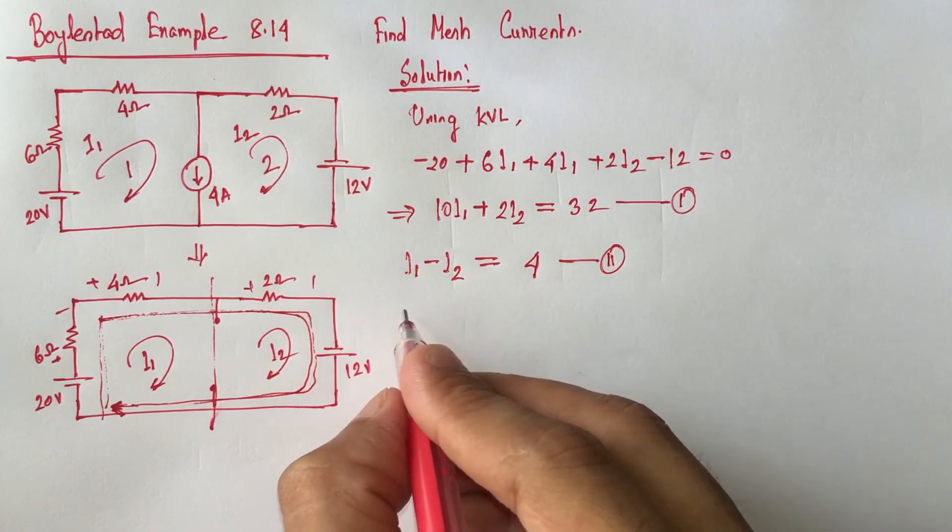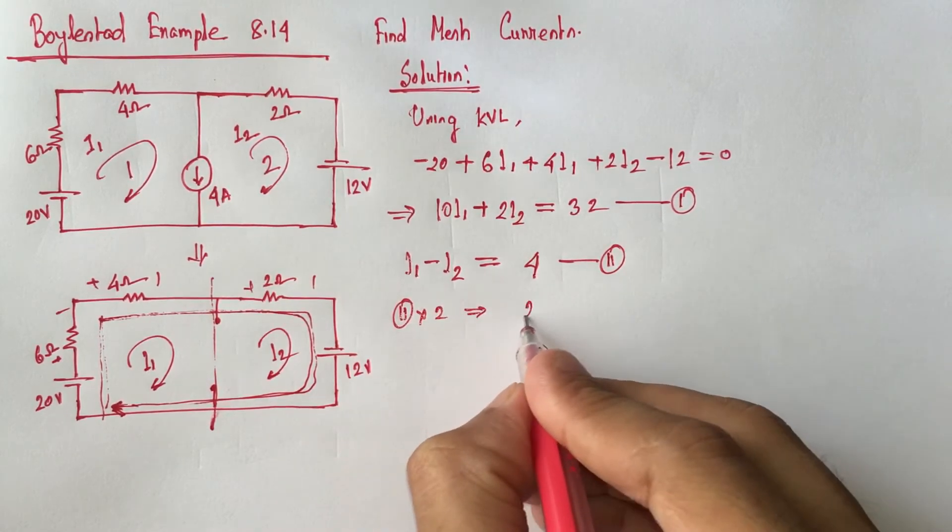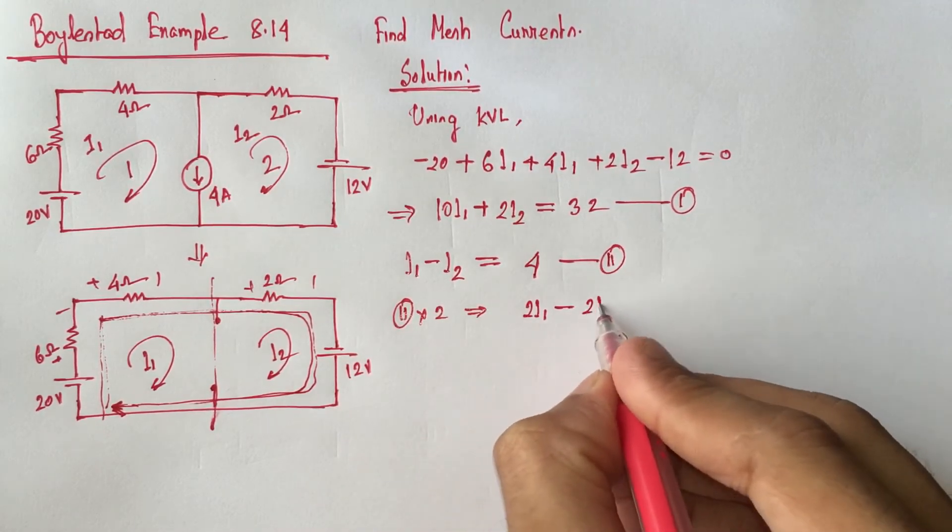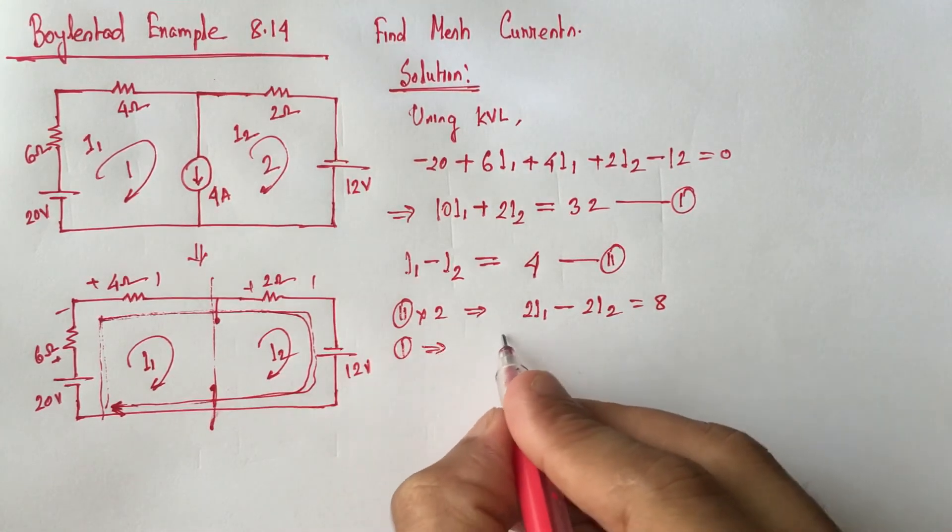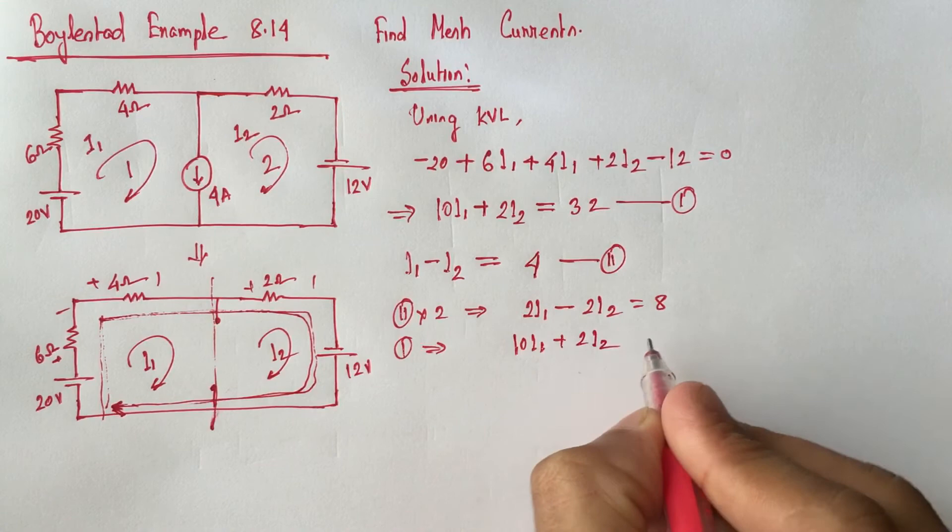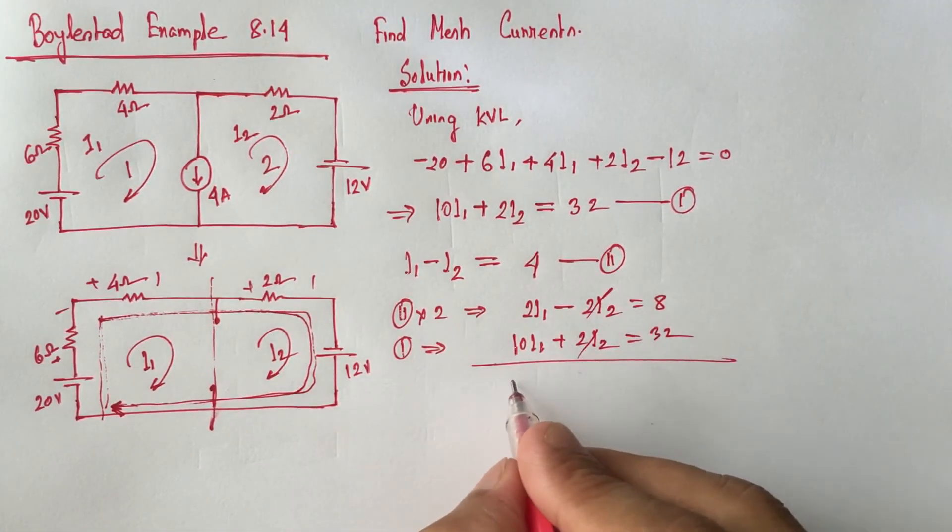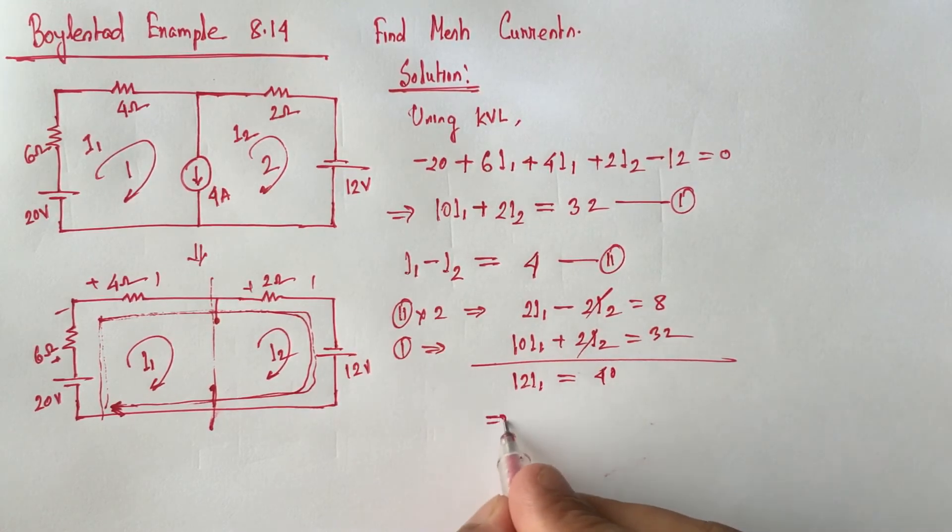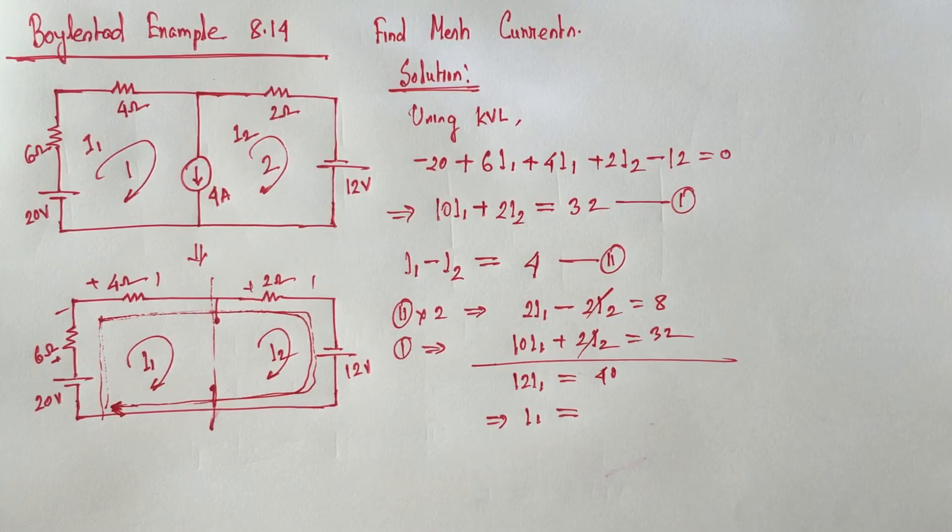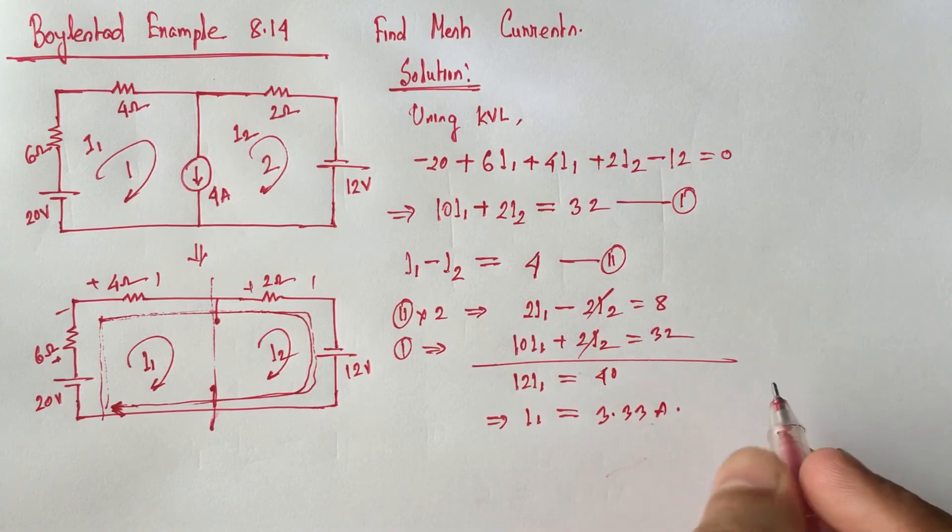If we multiply equation 2 by 2, we get 2i1 minus 2i2 equals 8. From equation 1, 10i1 plus 2i2 equals 32. The 2i2 will cancel each other. 12i1 equals 40, so i1 equals 3.33 ampere.